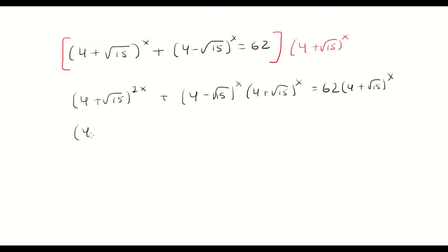Now I'm just going to rewrite this one because they have the same exponent, I'm going to factor that outside, and then I'm going to multiply (4 - √15) times (4 + √15).